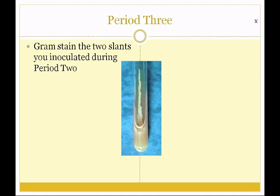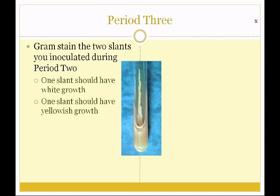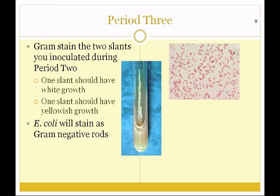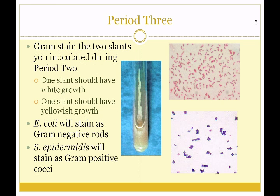During period three, you are going to gram stain the two slants you inoculated during period two. Remember, one should have yellow growth and one should have white growth. The white growth is Staphylococcus epidermidis, and the yellowish growth is Escherichia coli. E. coli will stain as gram-negative rods, and Staphylococcus epidermidis will stain as gram-positive cocci. And if you didn't get your gram stain from the previous lab, you can earn your ten points by showing these to me in this lab. See you in lab!